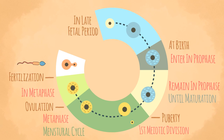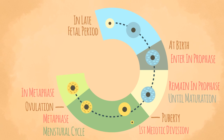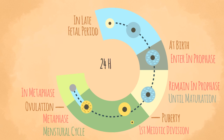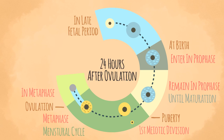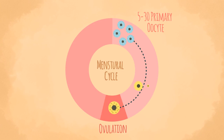The second meiotic division is completed only if fertilization occurs. This division results in two unequal daughter cells; the smaller is called the second polar body. If fertilization does not occur, the secondary oocyte fails to complete the second meiotic division and degenerates in about 24 hours after ovulation. In each menstrual cycle, 5 to 30 primary oocytes start maturing, but only one reaches maturity and is ovulated; the remaining degenerate.